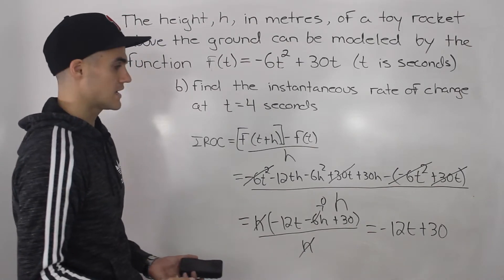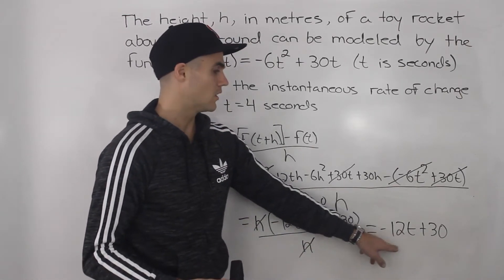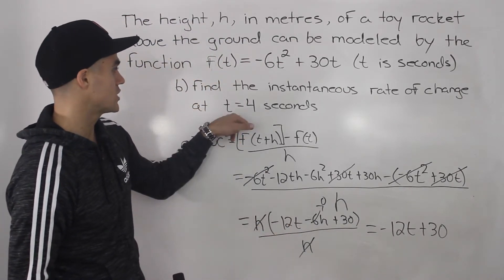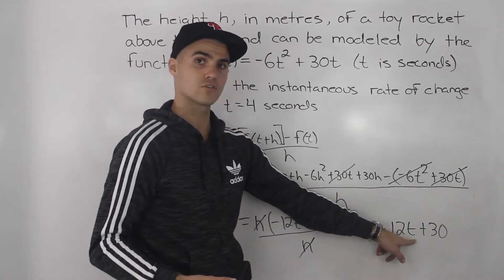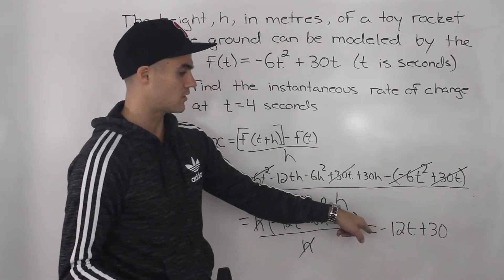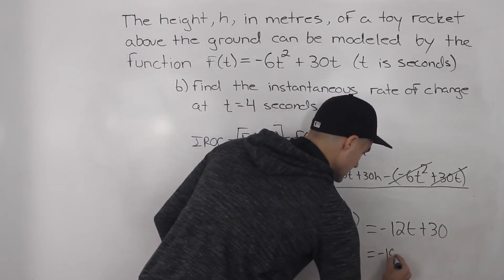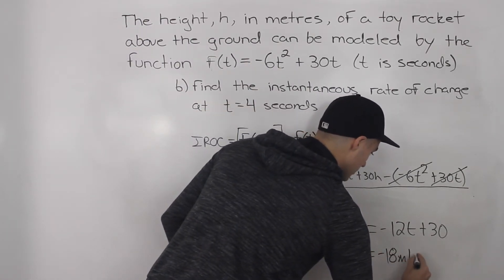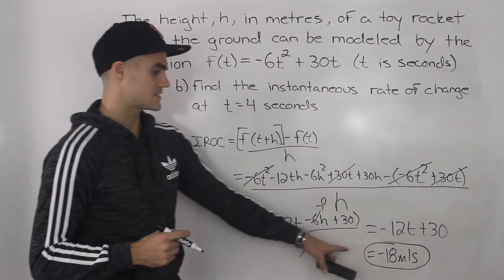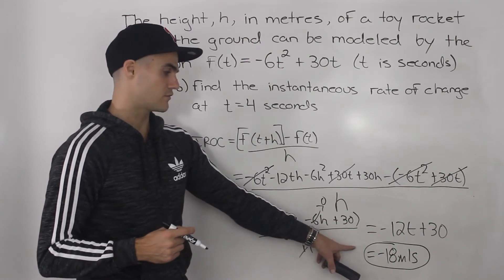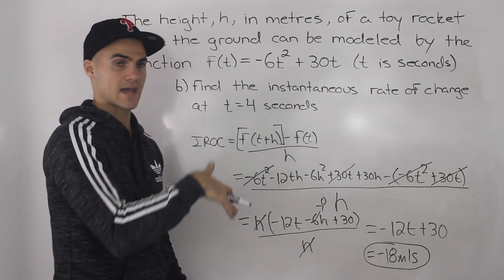Now we can find the instantaneous rate of change at any t value. We're finding it at t equals four seconds, so plugging in four: negative 12 times 4 gives negative 48, plus 30, gives us negative 18 meters per second. That is the speed at which the rocket is traveling at four seconds, and the negative just means that it is going down.